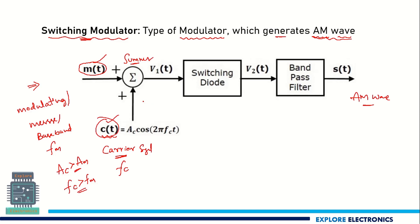This summer can be designed using an op-amp or any other circuitry — it is generally an adder. The output of the addition will be taken as V1(t). This will be given to a switching diode, which will generally be a PN junction diode. The output of this will be V2(t). Then V2(t) will be given to the bandpass filter with the cutoff frequency and bandwidth set. The bandpass filter output will be an AM wave.